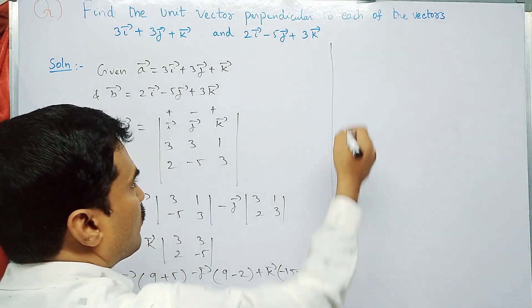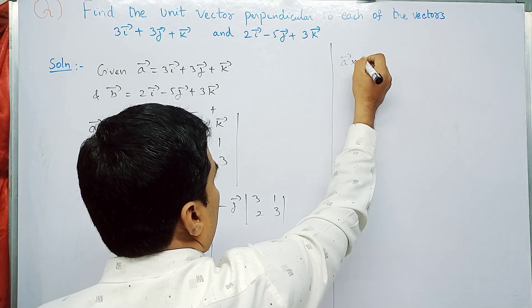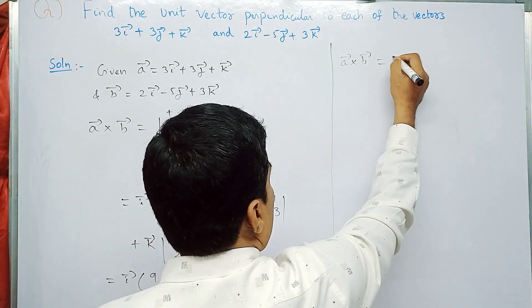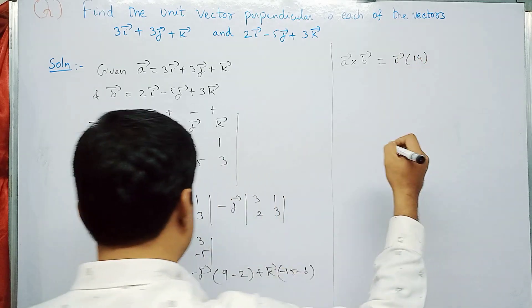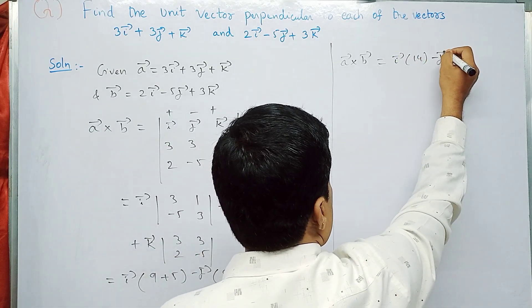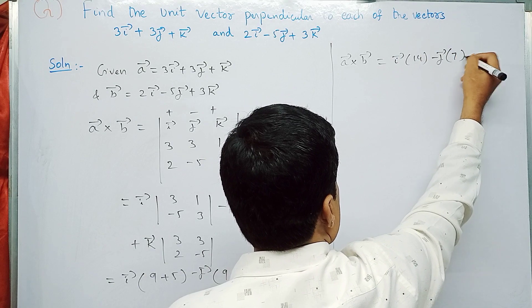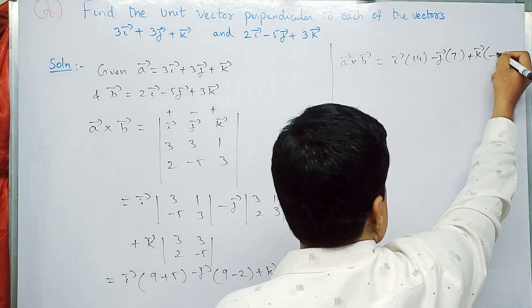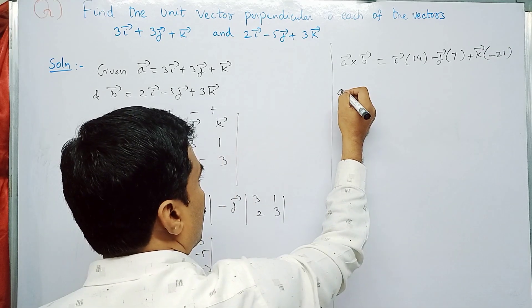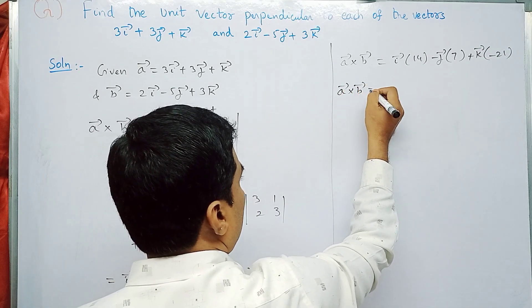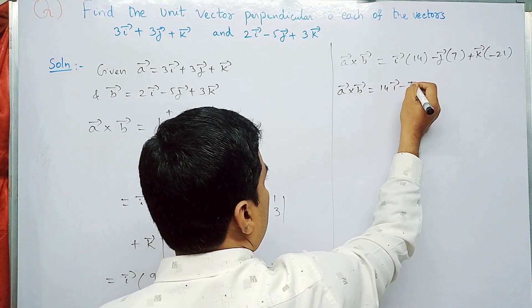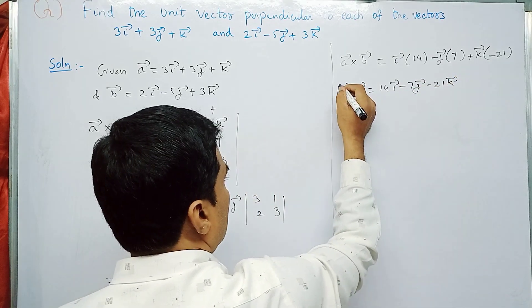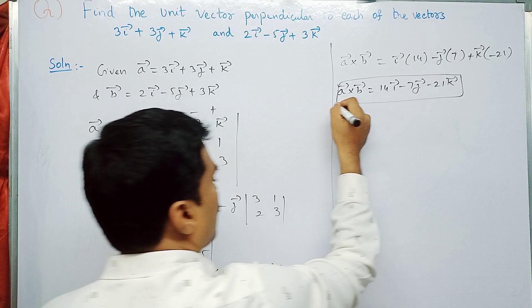Simplifying: a-bar cross b-bar = i-bar×14 - j-bar×7 + k-bar×(-21). So a-bar cross b-bar = 14i - 7j - 21k.